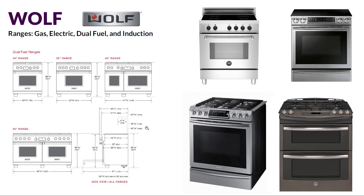Sub-Zero has Sub-Zero, Wolf, and Cove. Wolf handles all of the cooking — this includes gas, electric, dual fuel, and induction ranges. A range is the combination of the cooktop and the oven as a full unit. When talking about gas, electric, and dual fuel, it's really the method of cooking: all gas, all electric meaning both burners and oven, dual fuel meaning partially electric and partially gas, or induction for the cooking surface specifically.